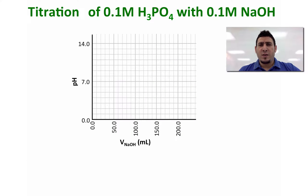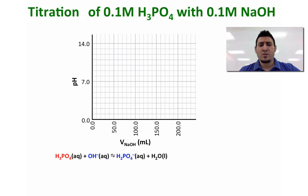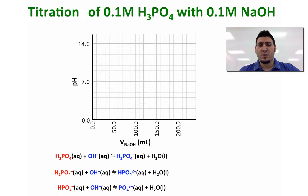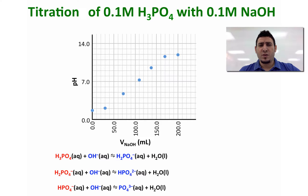Now let's consider the pH curve for the titration of 0.1 molar phosphoric acid with 0.1 molar sodium hydroxide. Phosphoric acid dissociates in three steps, giving Ka1, Ka2, and Ka3. If we plot the pH curve of this titration, we get the following curve shape.